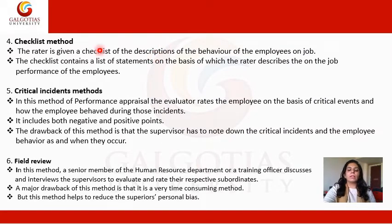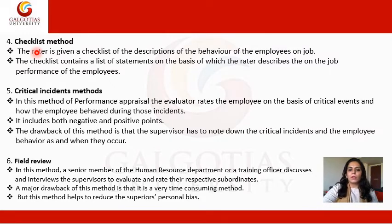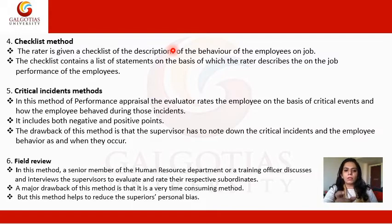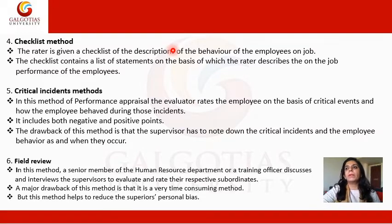In the checklist method, the rater is given a checklist of descriptions — for example, the punctuality of the employee, targets met, whether the employee was on the defaulter list, whether standard performance was met. There are certain categories which are listed and the superior or appraiser has to evaluate the employee's performance against that checklist.